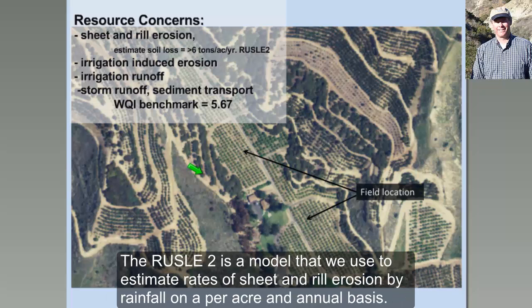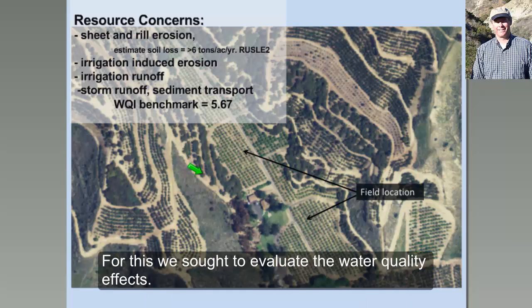RUSLE-2 is a model we use to estimate rates of sheet and rill erosion by rainfall on a per acre and annual basis. For this field, we also sought to evaluate water quality effects.